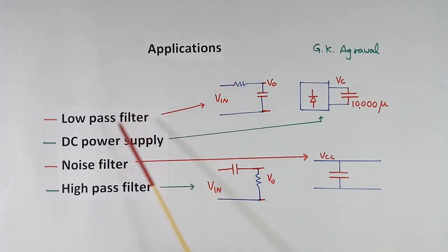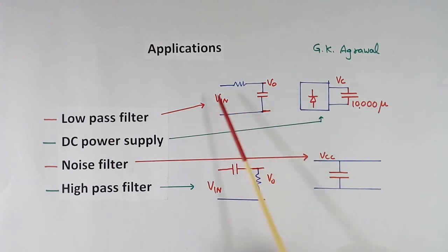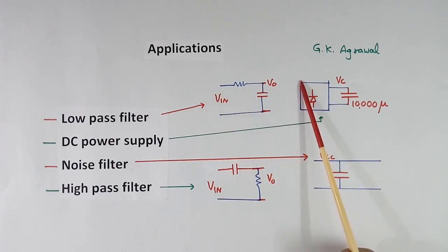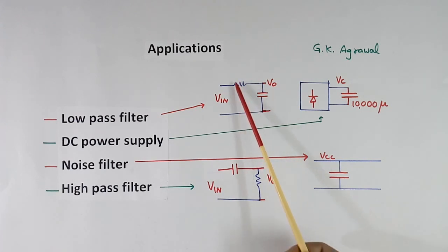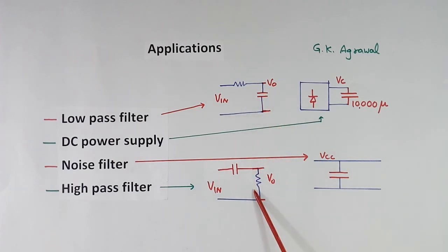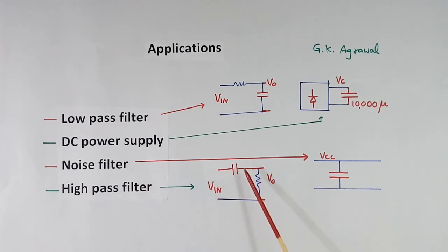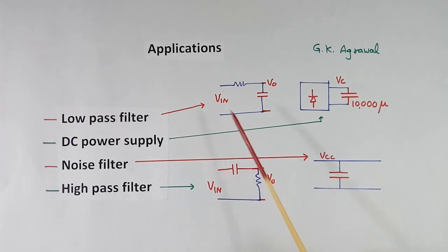Now we come to applications. First application is low pass filter. Here one R and C are used as a low pass filter — lower frequency components will pass and higher frequency will be filtered out. Because at higher frequency the impedance will be low, so current will flow through the capacitor, and this RC will have some cut-off frequency. Similarly, another application is high pass filter. In this, C is in series and resistance is after it. High pass means high frequency should pass. When high frequency component comes, this impedance will be low so it will pass. At lower frequency this impedance will be high, so drop will be high across it. So this is called the high pass filter, this is called the low pass filter.